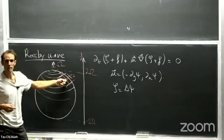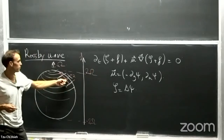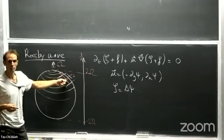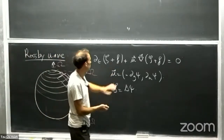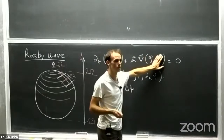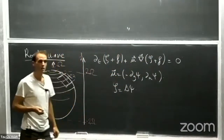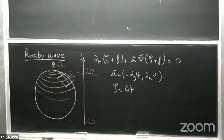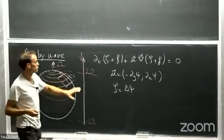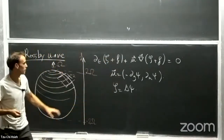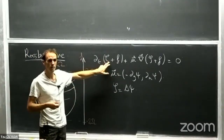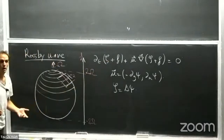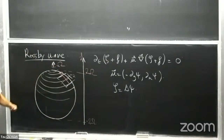It's interesting to see what happens in this model for the f-plane and for the beta-plane approximation. On the f-plane, f is constant, so this term disappears because of the derivative. On the f-plane, you forget about the rotation within this model — there is just the relative vorticity. Even if you are on the f-plane, in this model you are invariant with respect to time-reversal symmetry.